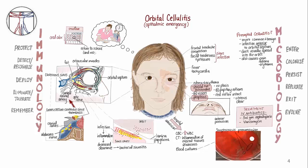We know that bacteria accumulated in her sinus cavity and somehow transited across to the normally sterile space of the orbit, where the bacteria was able to evade the immune response, persist, and replicate, leading to her presentation. The sequence of events is really the important part to remember from this module.